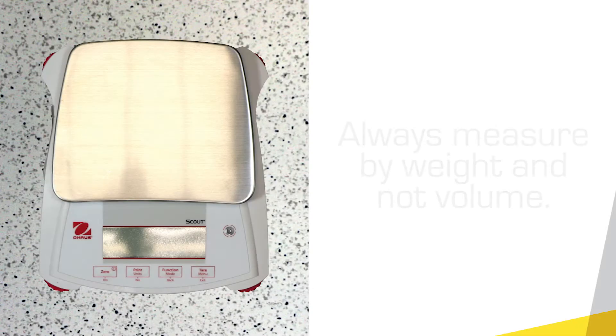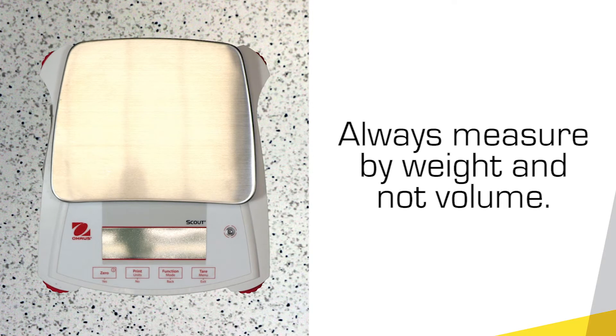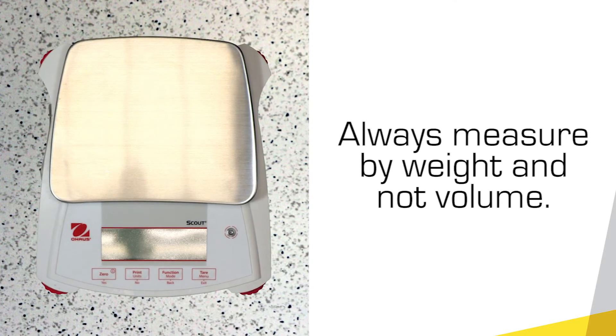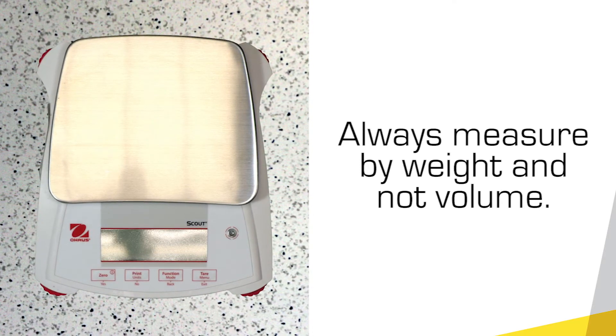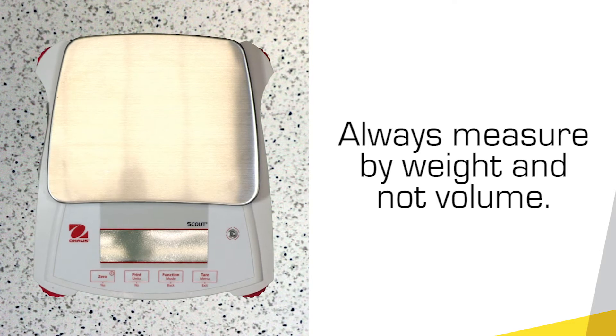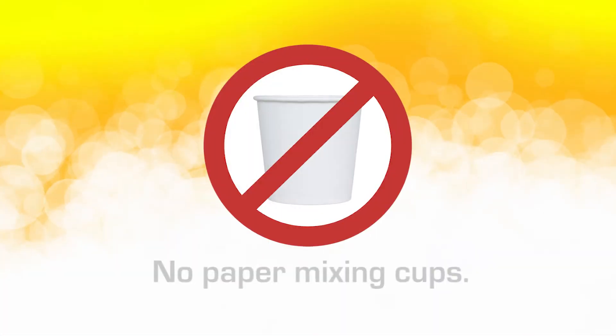The scale is important so that you measure by weight and not volume. Weight measurements are much more accurate and will help you mix it all up successfully. The mixing cups should not be made of paper because they can absorb moisture and some products are sensitive to moisture, especially urethanes.